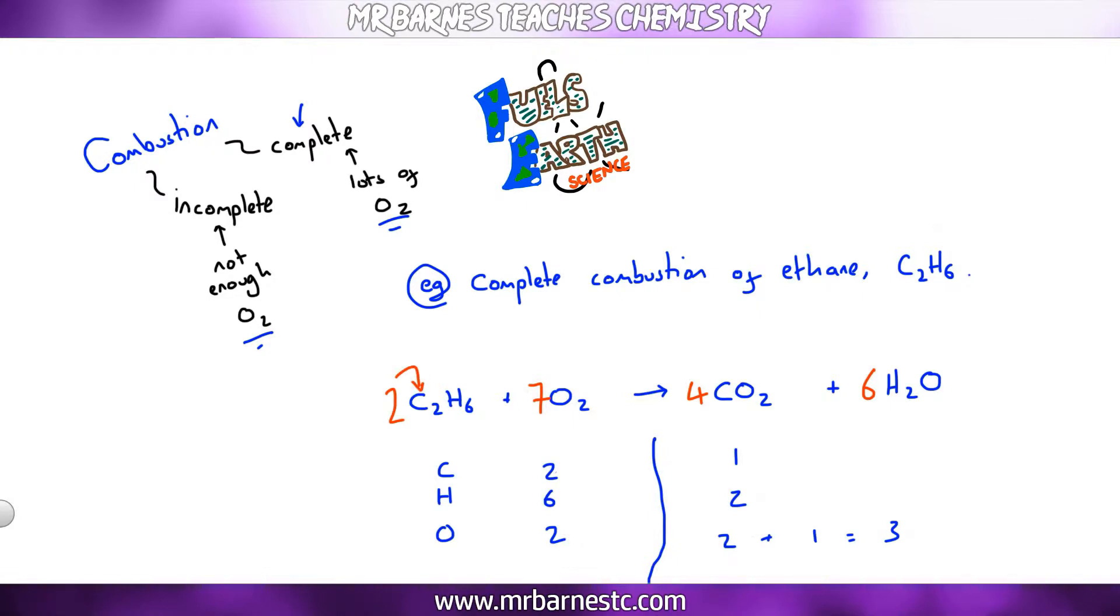Now, it's always a good idea to check this afterwards. I have two C2s, so that gives me four carbons on the left, two H6s, so that's 12 hydrogens, and seven O2s, that's 14 oxygens. On the right, four times one is four carbons. Six times two is 12 hydrogens. In my CO2, I have two oxygens timesing that by four, so that becomes eight. And then my H2O, I have six times one, which is six. I add my eight and my six together, and I get 14, which means I'm balanced.